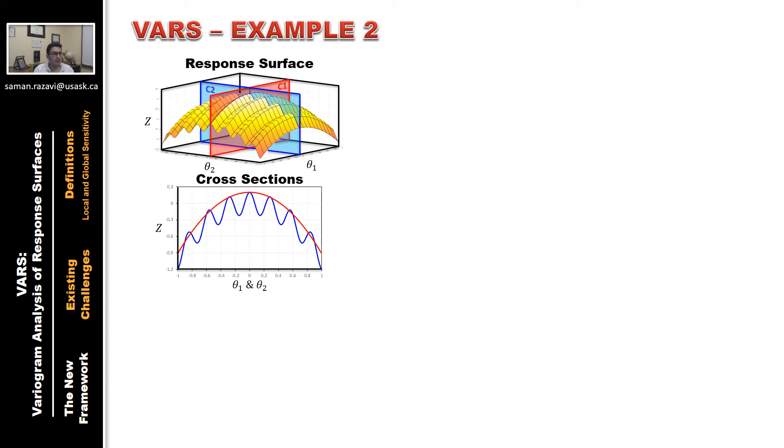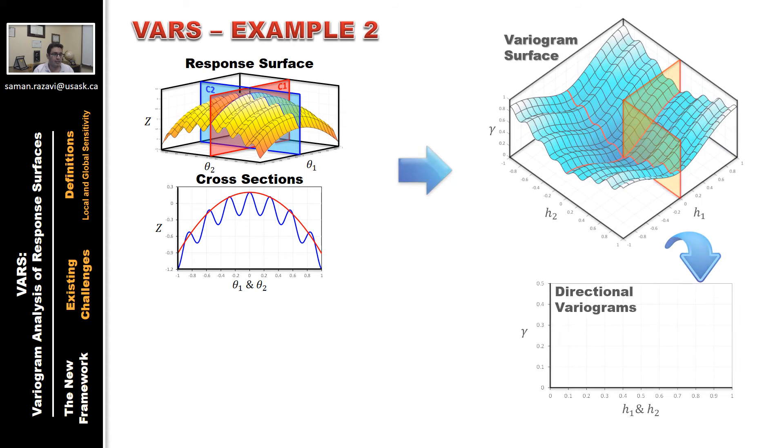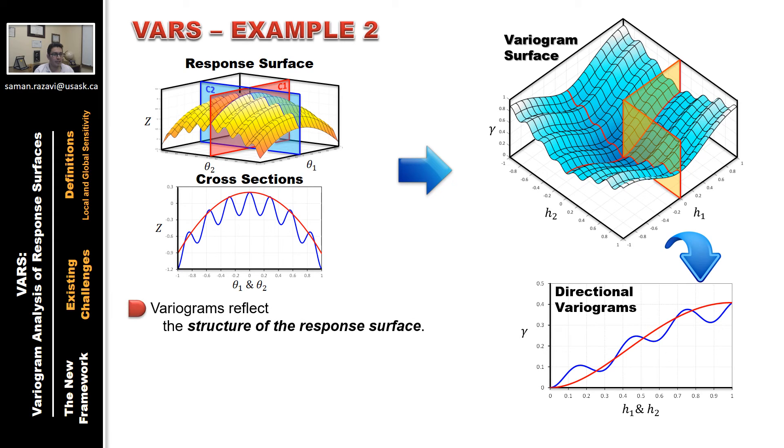Here is the second example and the variogram surface and the directional variograms. The very first thing here to notice is that the variogram reflects the structure of the response surface. You see the multimodality in the cross section in the directional variogram for the blue direction.